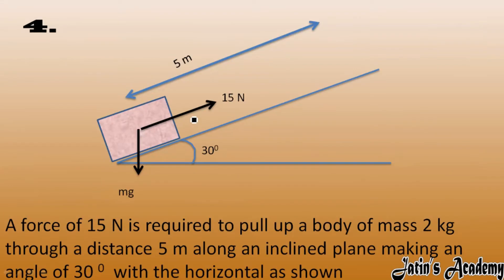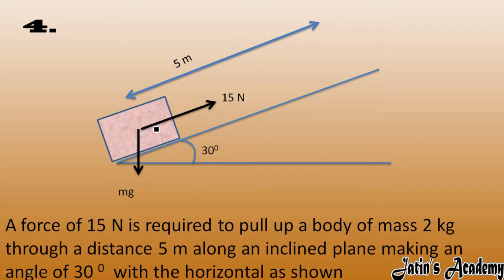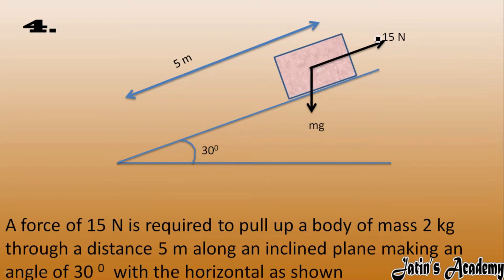In this question, a 50 N force is required to pull up a body of mass 2 kg through a distance of 5 meters along the inclined plane, which makes an angle of 30 degrees with the horizontal as shown in the figure. This block is moved in the upward direction by this 50 N force, and the mass of the block is given as 2 kg.